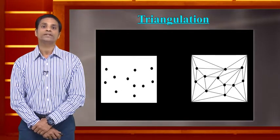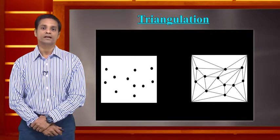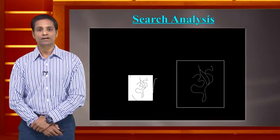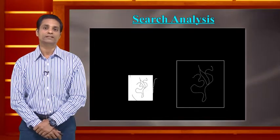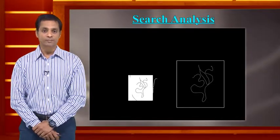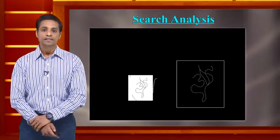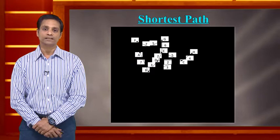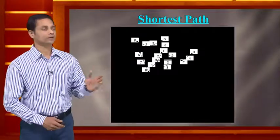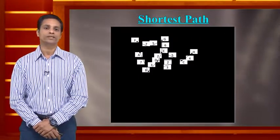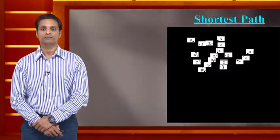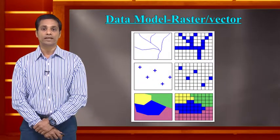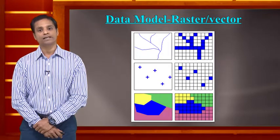GIS enables spatial search and analysis since all geographic features have their own coordinates, helping locate specific properties or goods. Shortest path analysis can be used to design rescue routes to save lives in specific locations. Data in GIS can be stored as point, line, and polygon (vector data) or as pixels (raster data). Vector data identifies and locates objects using XYZ coordinates and linear measurements.